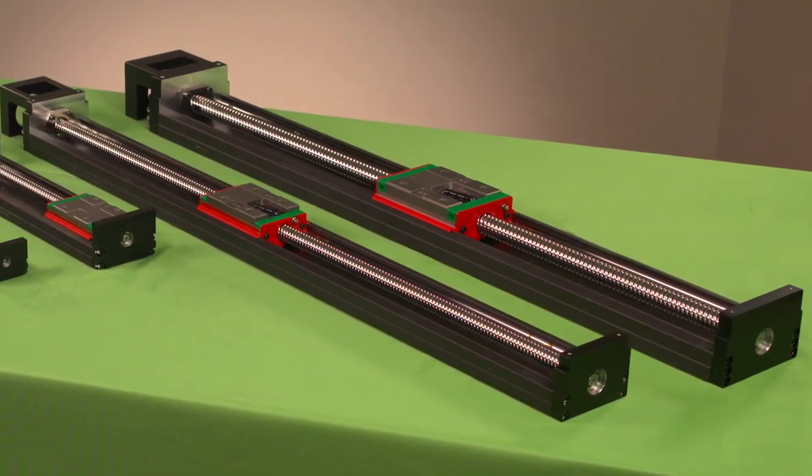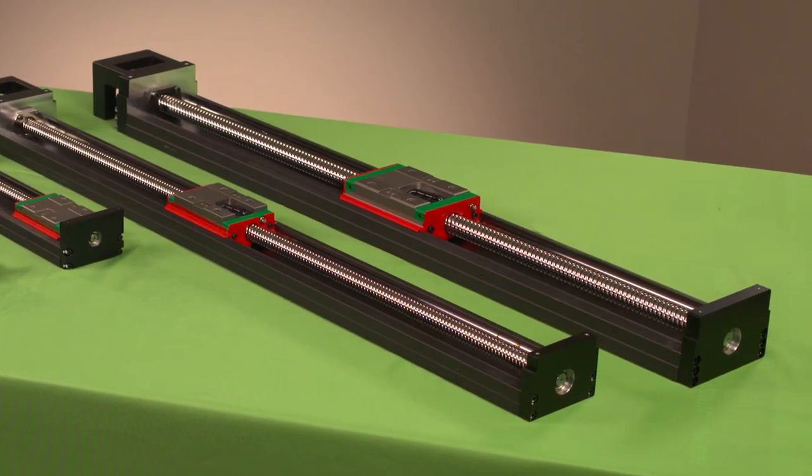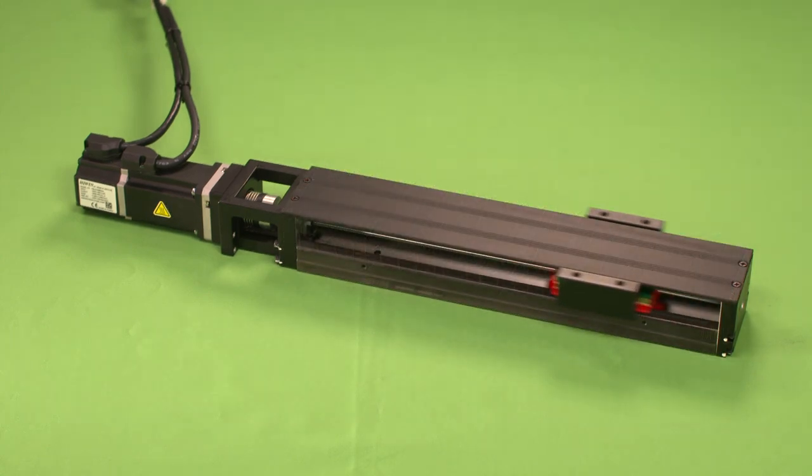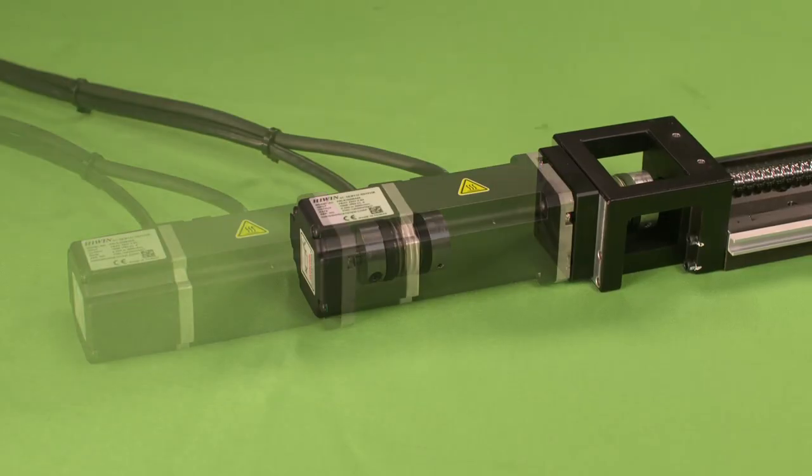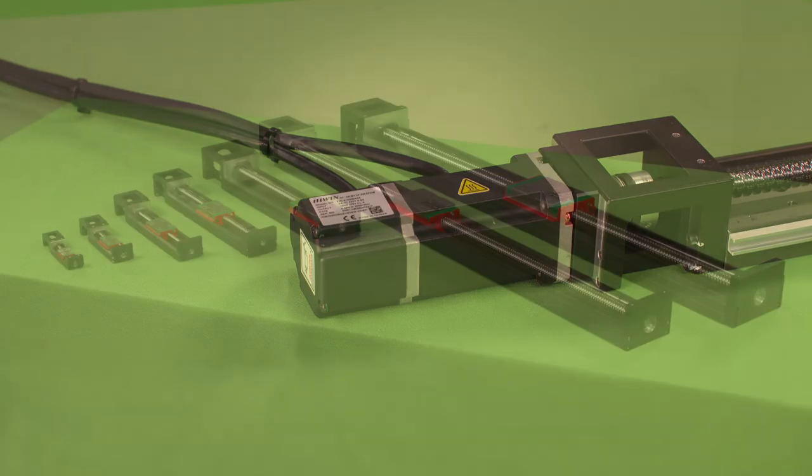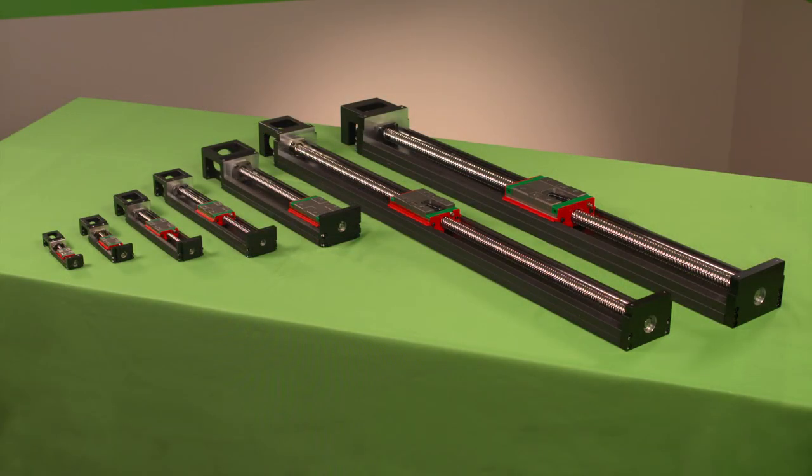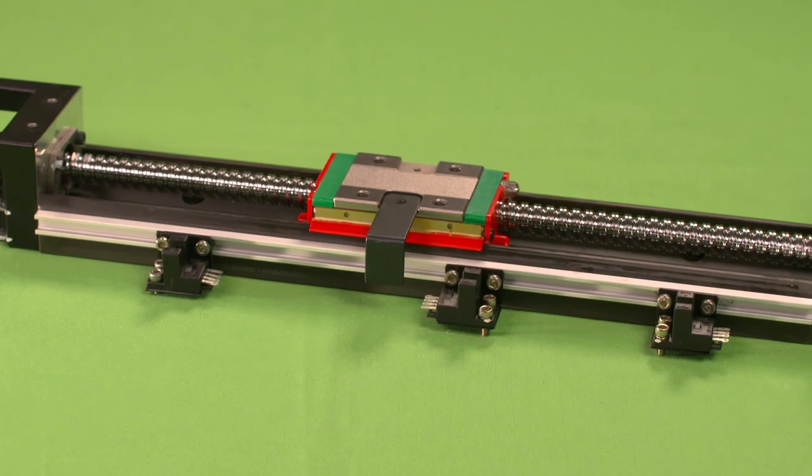Options include multiple sizes and lengths, different dustproof options of bellows or covers, motor adapter flanges for HiWin and third-party motors, custom ball screw leads, multiple sliders, and limit switches.